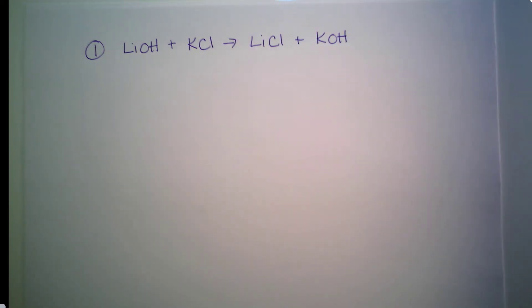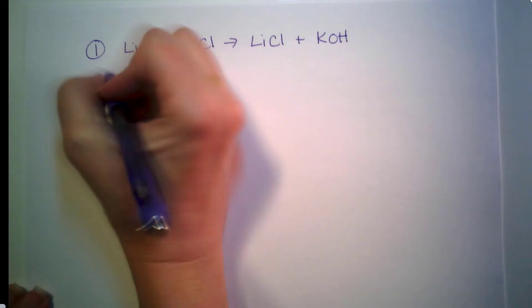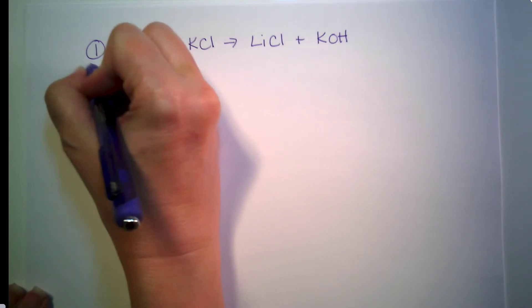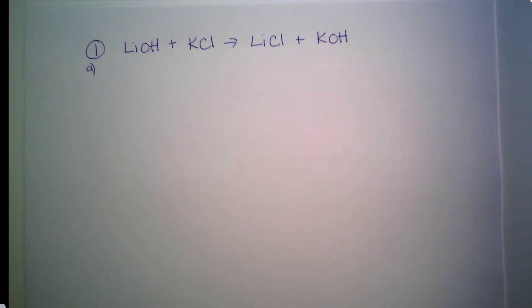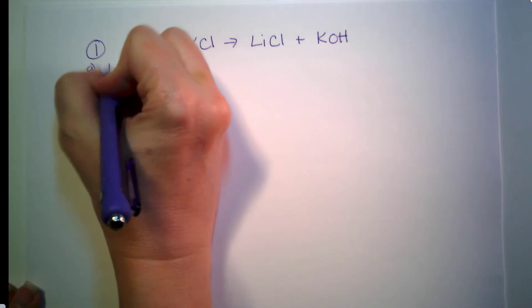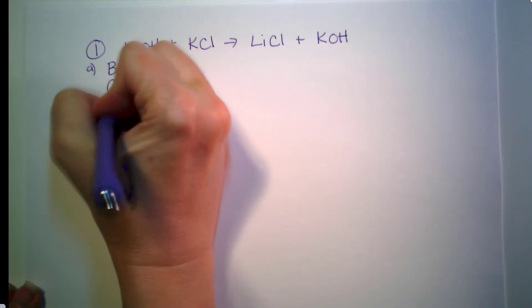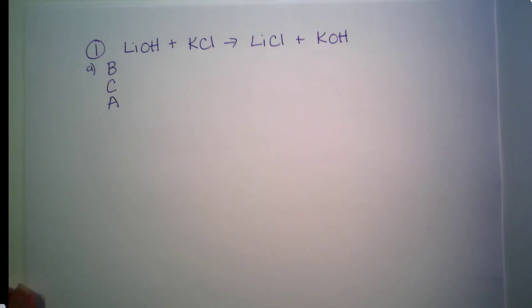If we look at problem number one, it has two parts to it. Let's focus only on part A. So part A says, I began this reaction with 20 grams of lithium hydroxide. What is my theoretical yield of lithium chloride? Don't worry about part B yet. So we need our BCA table.